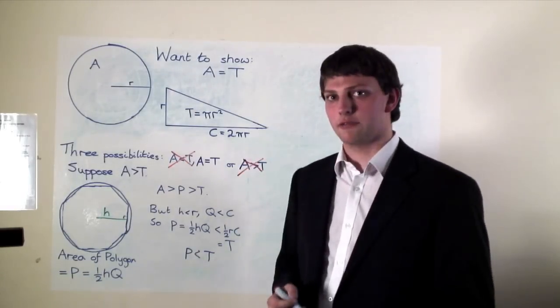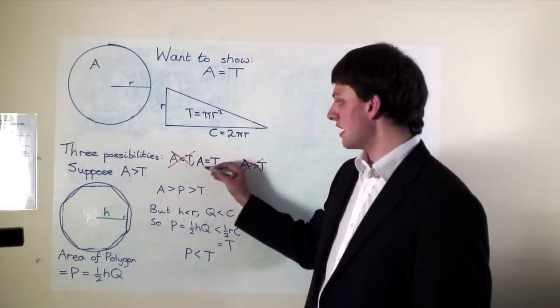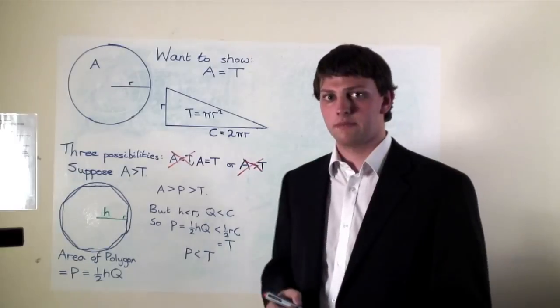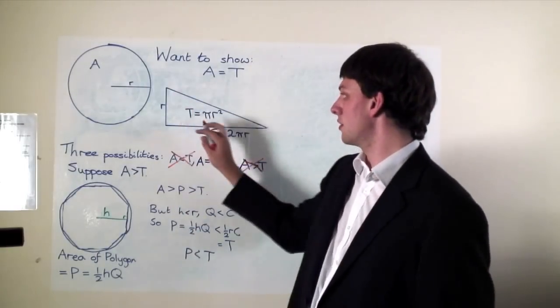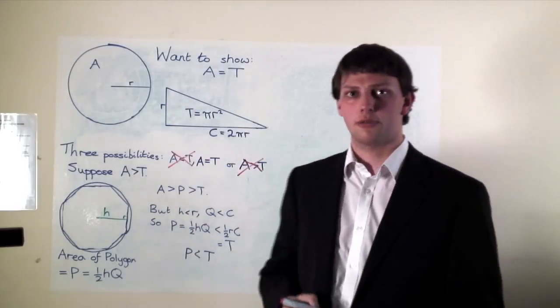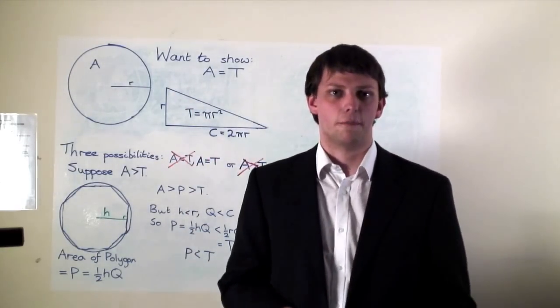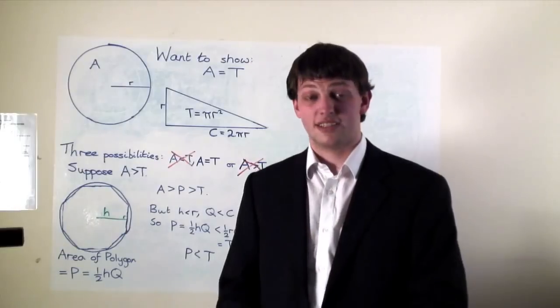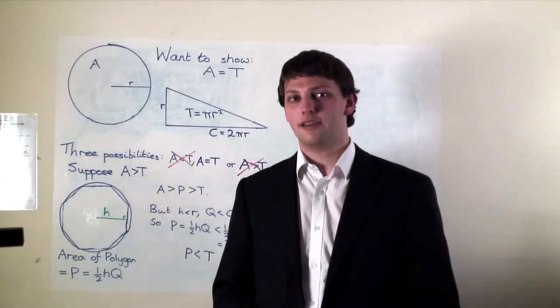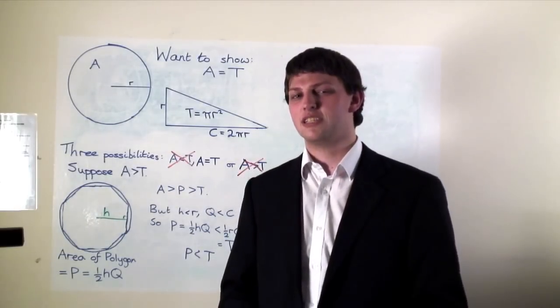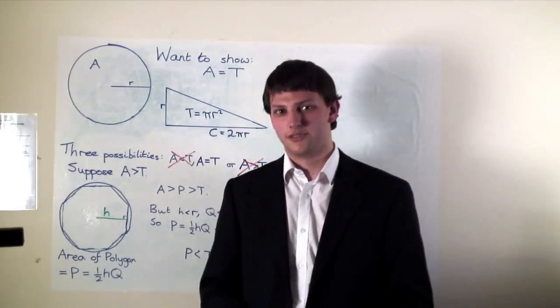All we're left with is that the circle's area equals the triangle's area — that is, the area of the circle is πr², which is what we wanted to show. Next time we'll be taking on the infinite and finding out that some infinities are bigger than others.